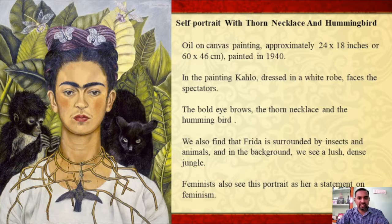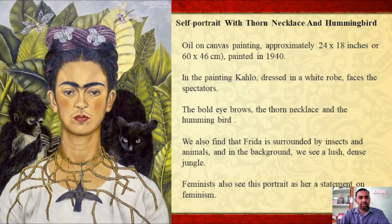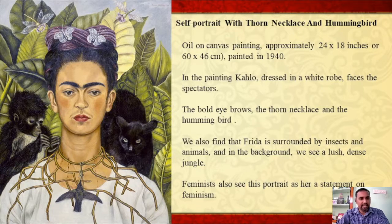The thorn necklace and the blood oozing from the wounds it makes reminds us of the woven crown of thorns placed on the head of Jesus during the events leading up to his crucifixion — so we have a Christian imagery here that Kahlo perhaps consciously or unconsciously plays on the canvas. Art historians say that perhaps Kahlo was comparing herself directly to Jesus Christ through this. It could also be said that the necklace is symbolic of her marriage and separation from Diego Rivera, with the necklace piercing Kahlo's neck symbolic of the pain she was experiencing over this separation.